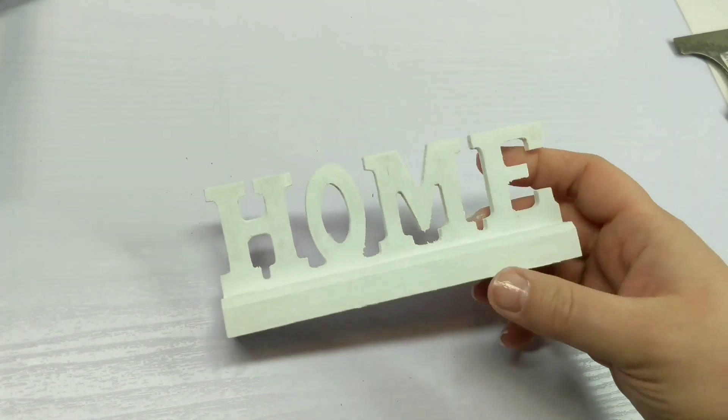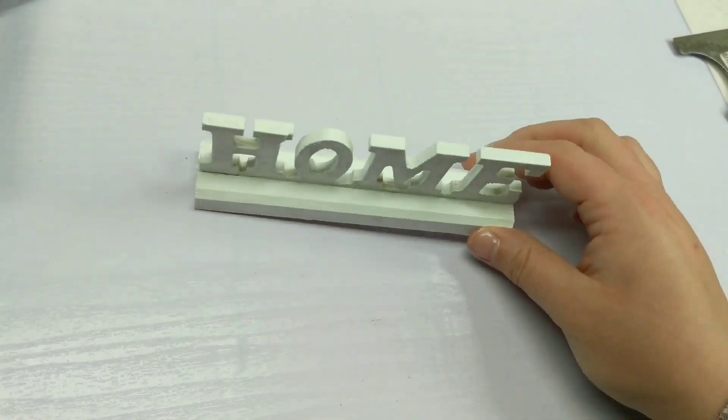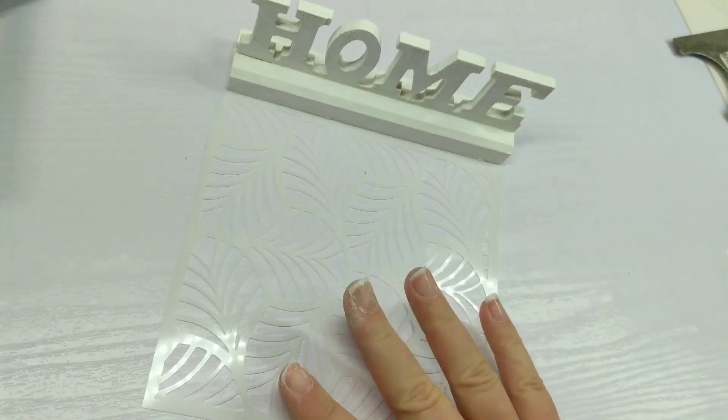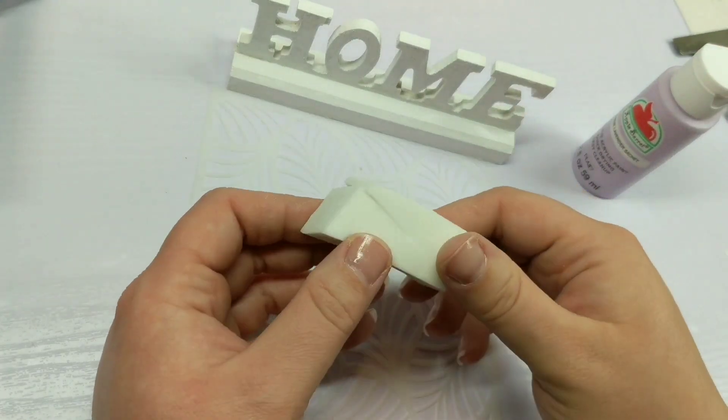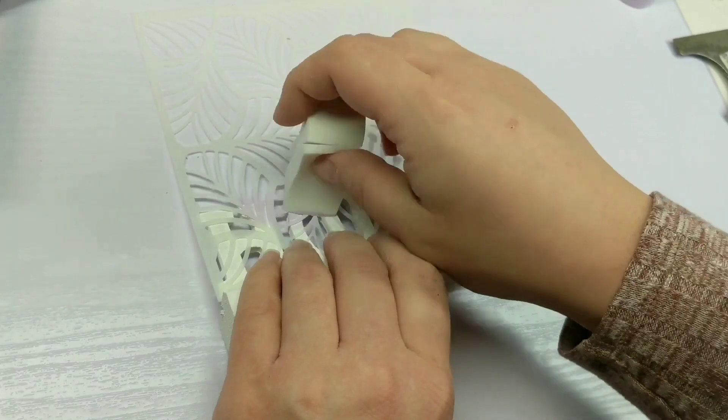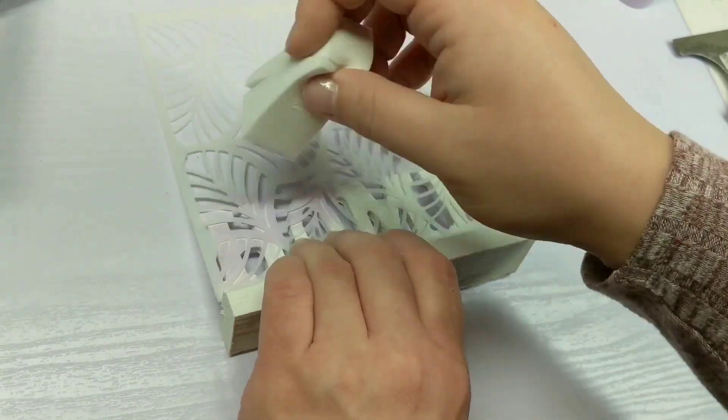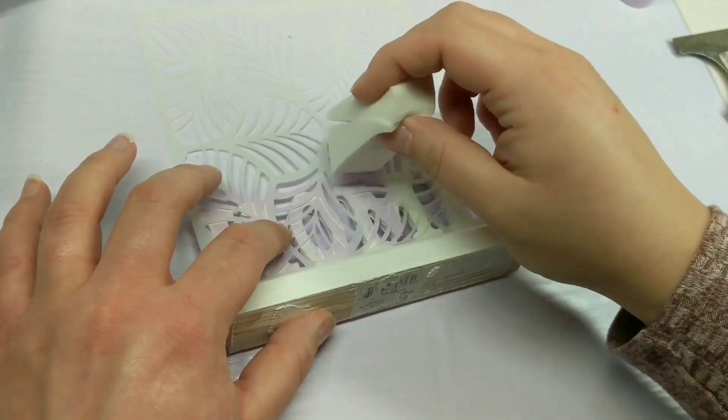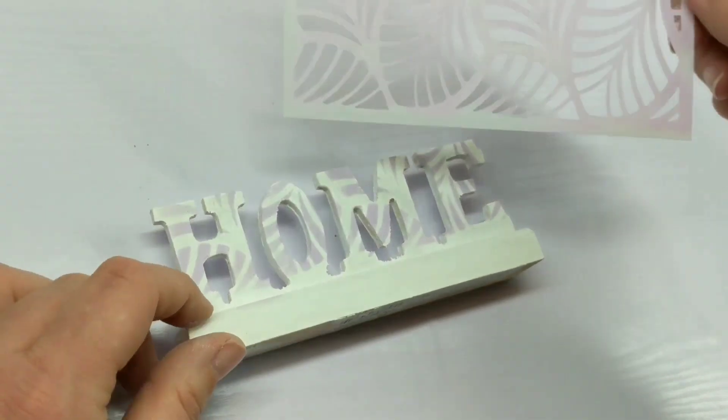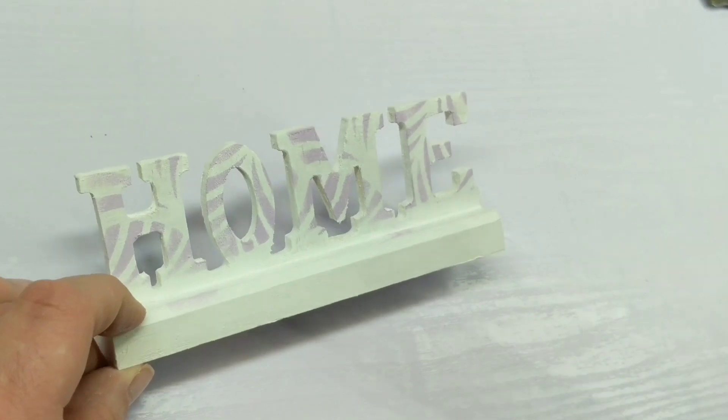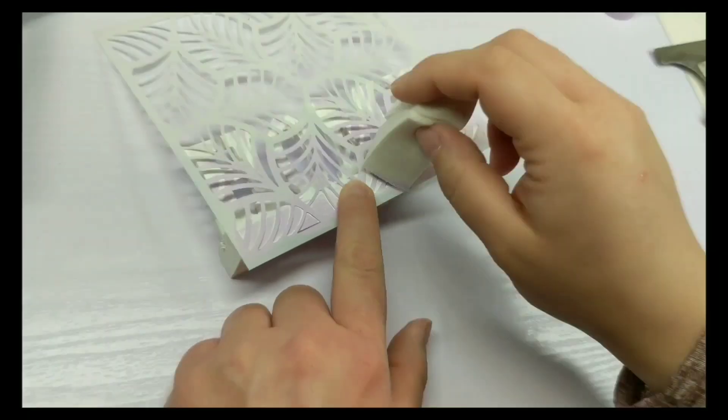I always see these little wood home pieces, whatever else Dollar Tree's got laying around, and think to myself 'oh that's kind of plain, I gotta do something with it.' Well today I'm doing something with it. Now all these pieces that you're gonna see, I already painted them white. I feel like you didn't really need to see me paint them white.